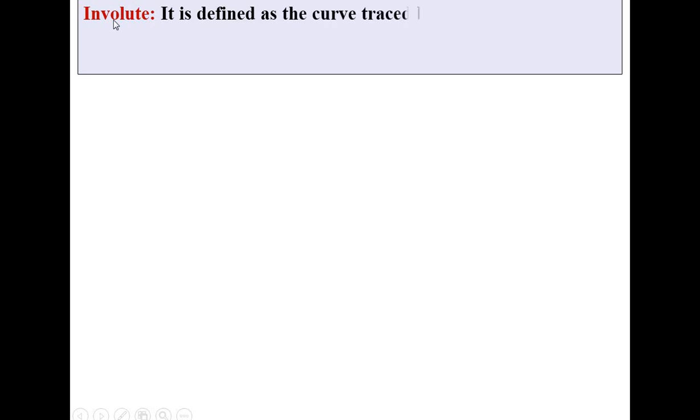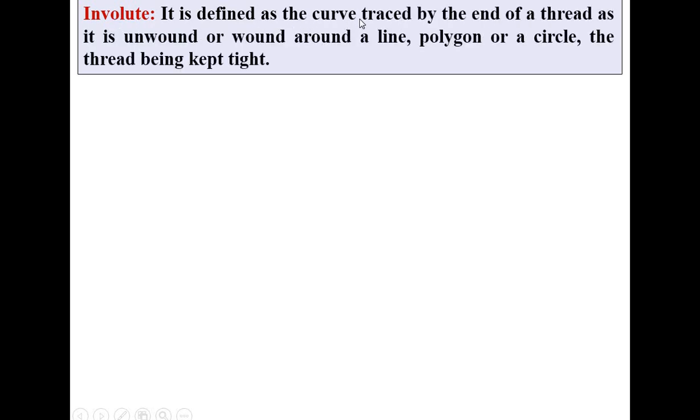Now the second question, the definition of involute. It is defined as the curve traced out by the end of the thread as it is unwound or wound around a line, around a polygon or around a circle. The condition is what? The thread being kept tight.